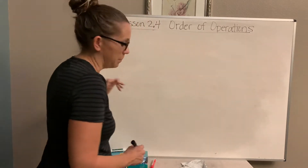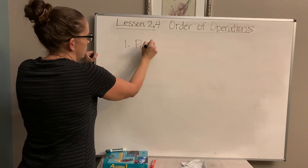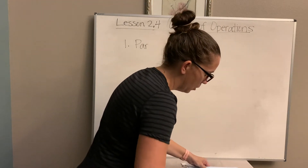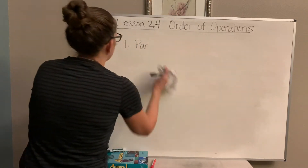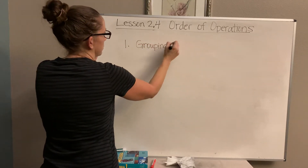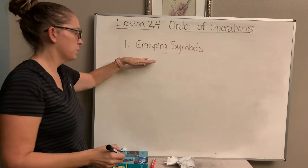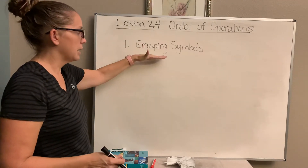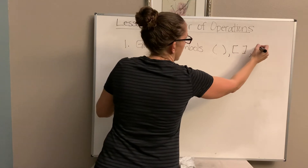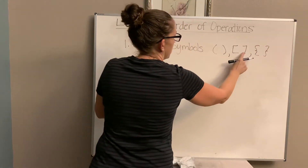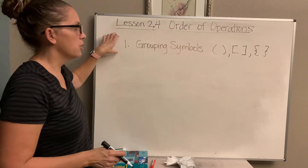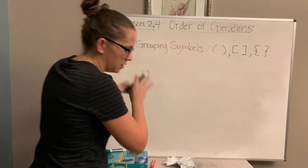So we're going to write down the order of operations. The first thing you have to do is grouping symbols — in algebra we call them grouping symbols, not just parentheses. We're actually going to do grouping symbols tomorrow, not today. Some grouping symbols are parentheses, brackets, and there are different types of brackets. Kids always have a hard time with those brackets, but that's okay. This is what we're doing tomorrow, but I want you to know that is what you do first in order of operations.